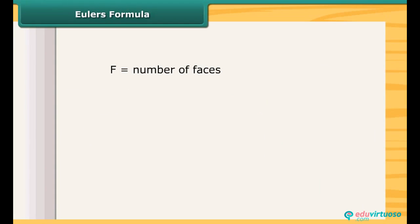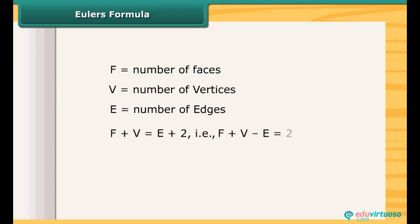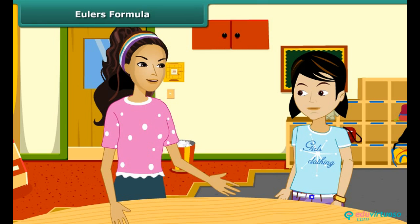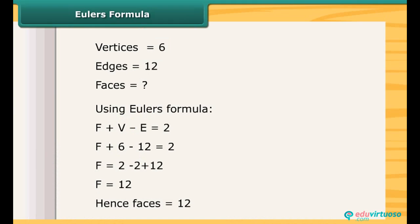If F stands for number of faces, V stands for number of vertices, and E stands for number of edges, then the Euler's formula is F plus V is equal to E plus 2. That is, F plus V minus E is equal to 2. This formula is true for any polyhedron. If number of vertices and number of edges of a polyhedron is given, then we can find the number of faces of that polyhedron using Euler's formula. And if number of faces and number of vertices are given, then can we find the number of edges? The two values are given, then we can find the third value using Euler's formula. Here is an example.